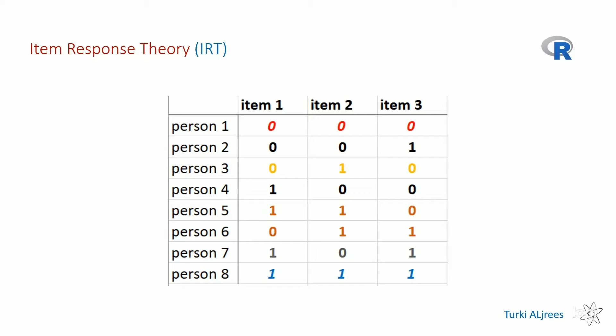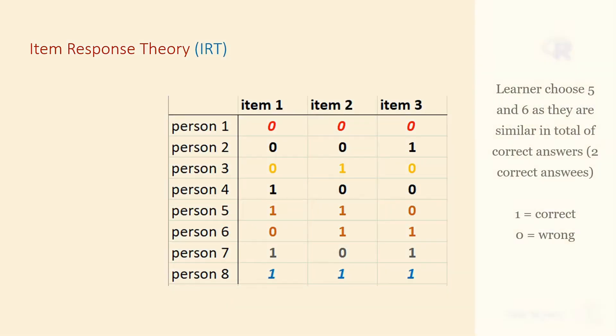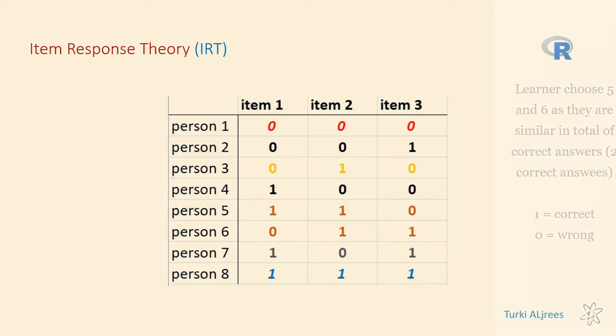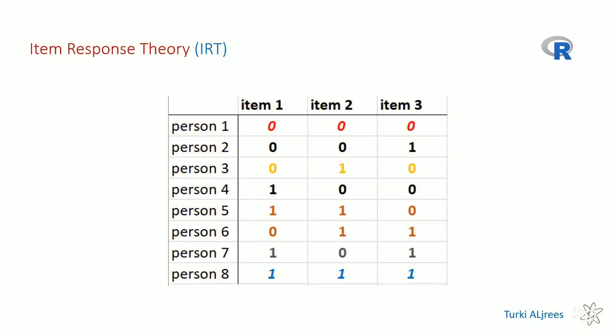Can you see any similarity between these answers? We basically changed yes and no to zero and one. Let's take persons five and six. Person five answered two questions correctly and one question incorrectly — two yes and one no. What do we call these patterns we find among the data?